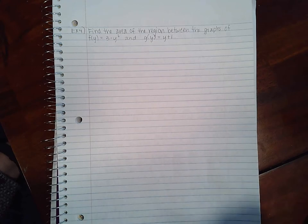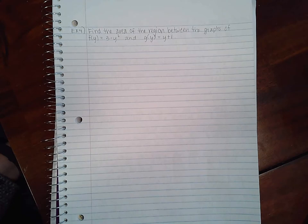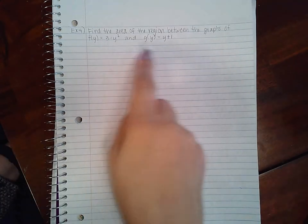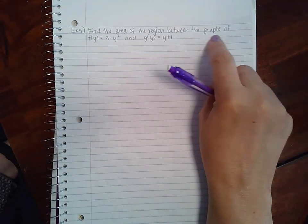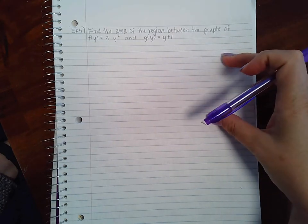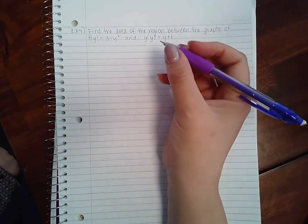This time the functions are in terms of y, which means we should be integrating with respect to dy. This also means that my rectangles should be horizontal. However, they don't give me the horizontal lines which I'm supposed to be bounded by.